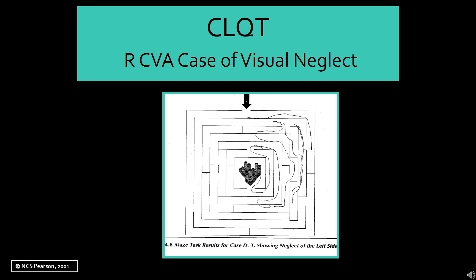The final example is on the more difficult of the two CLQT mazes. Not only is she only going to do the right-hand side of the maze, but in order to try to get to the money from the start arrow, she's disobeying rules, going up dead ends, and crossing lines. Needless to say, she doesn't earn any points for this performance.